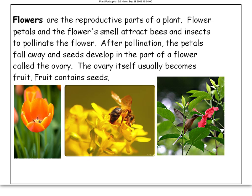You'll learn more about that in our pollination lesson. But in pollination, the petals are going to fall away and seeds are going to eventually develop. Part of the flower is called the ovary, and that usually becomes a fruit. We know fruits contain seeds, and we plant seeds to make more plants. So if this pollination didn't happen with flowers, you would not have more plants. Flowers are the reproductive parts of the plants.